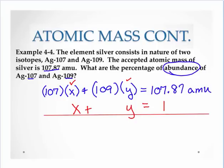I'm going to multiply this x by negative 107. Now as long as I multiply every one of these by that same number, I still have an equality maintained.